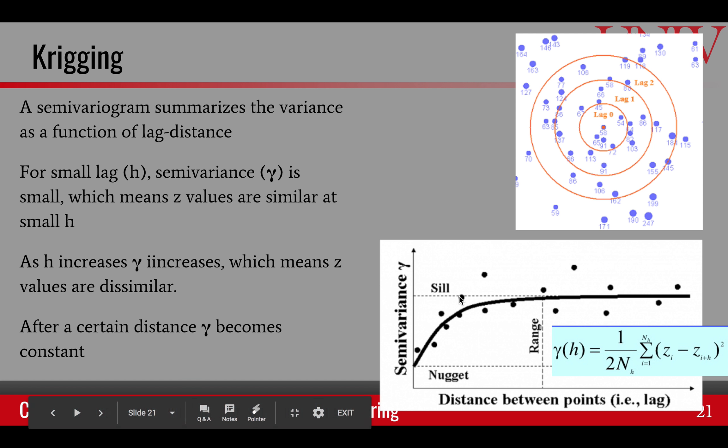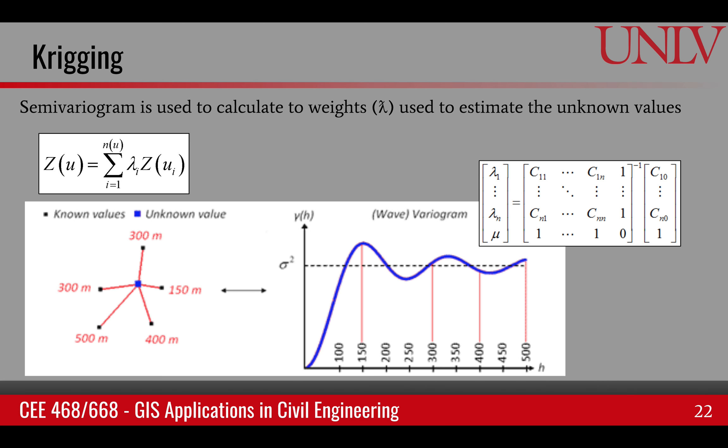This is the measure of spatial variability in the Kriging method. Once we have the semi-variance calculated, then from there we can estimate these weights, lambdas. Then these lambdas become the weights for computing the unmeasured location. These are all the known locations with measured data. We find these lambdas from the variogram. Then weighted sum is the unknown value.